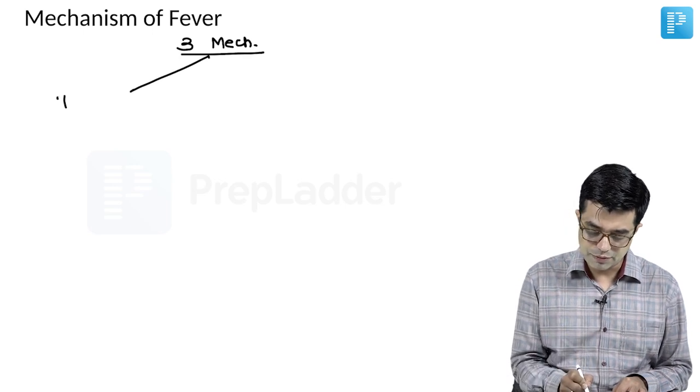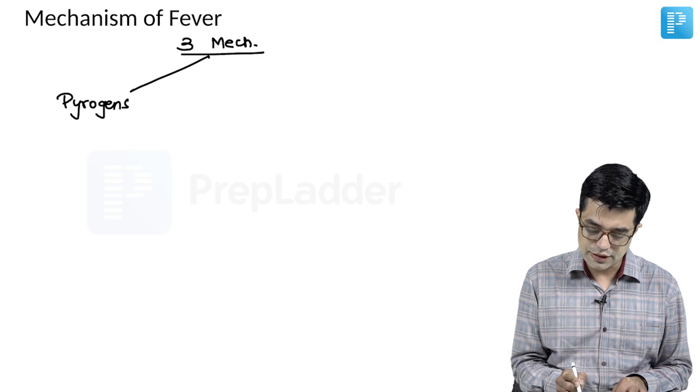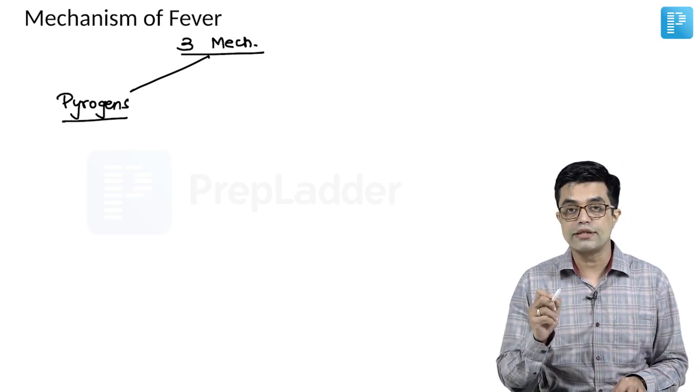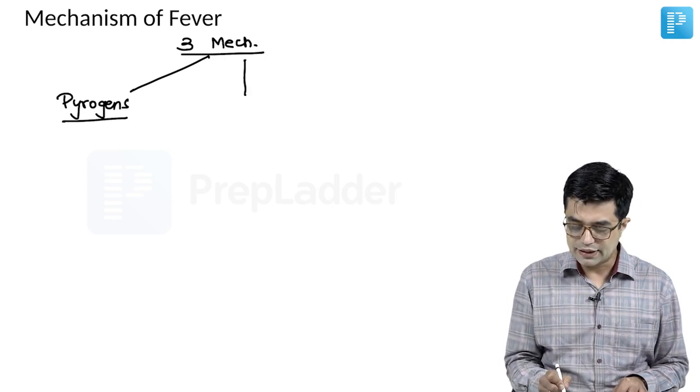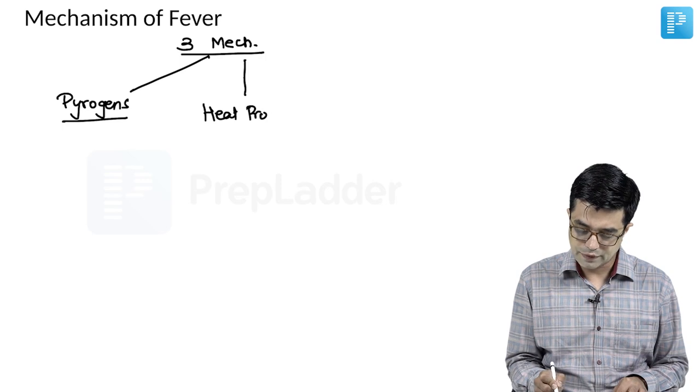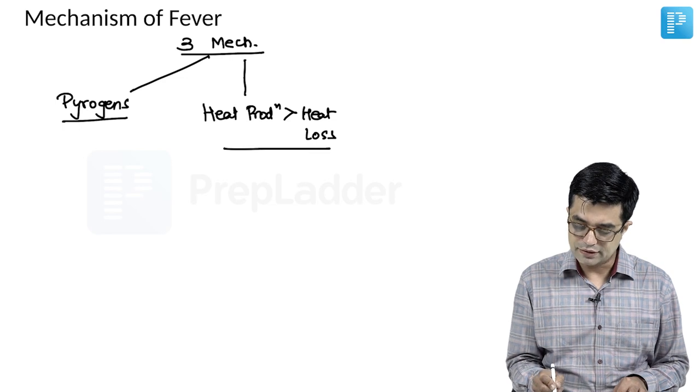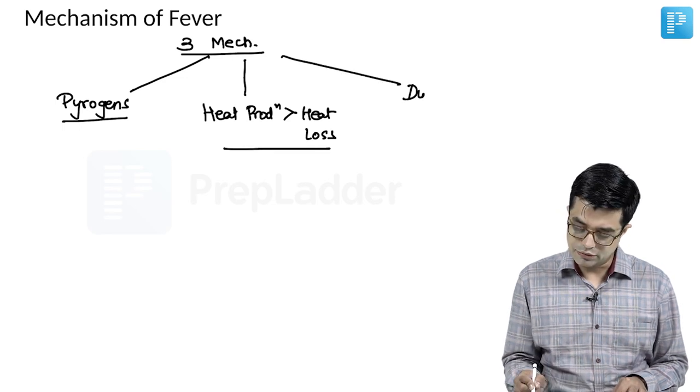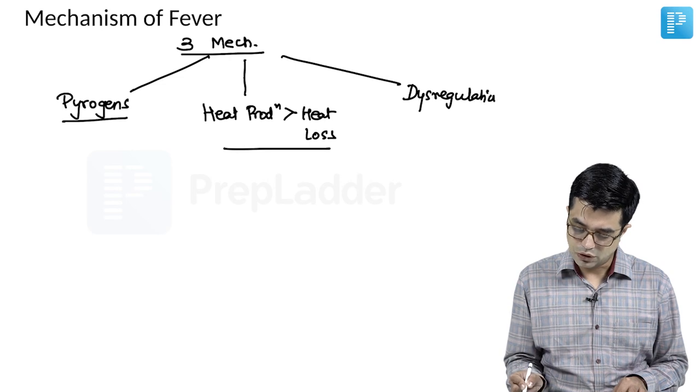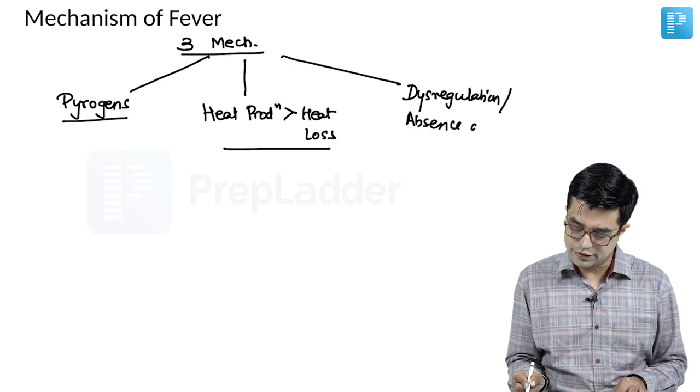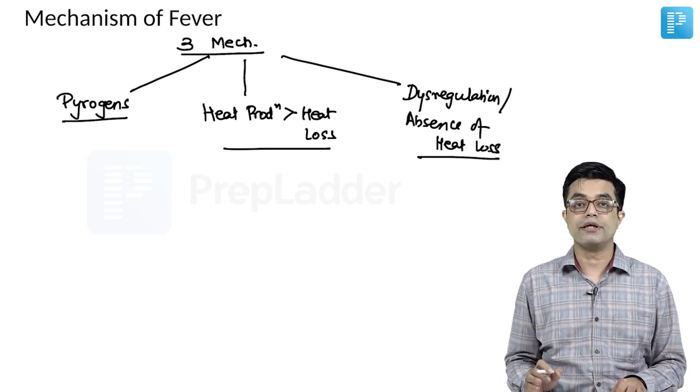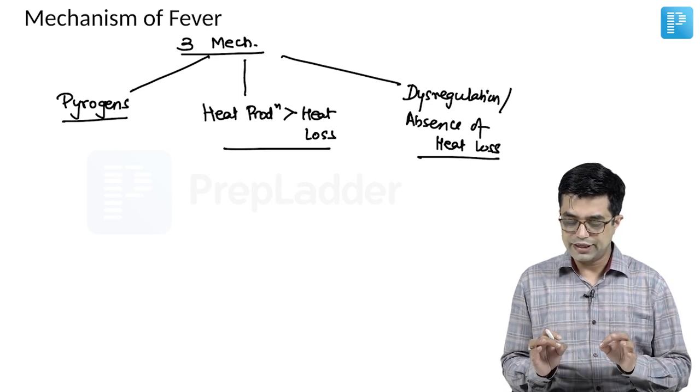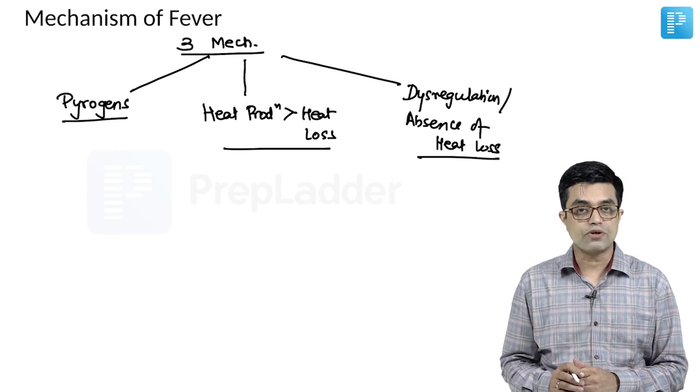First, fever can occur due to production of pyrogens. Pyrogens are those chemicals, those substances which precipitate, which start, which mediate fever. Second, it can occur whenever there is heat production more than heat loss in the body. And third mechanism is dysregulation or absence of heat loss. These are the three mechanisms: pyrogens, heat production more than heat loss, dysregulation or absence of heat loss.